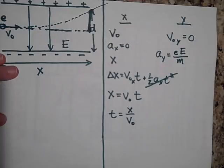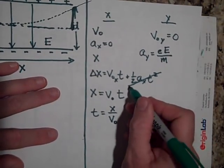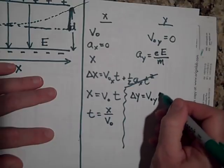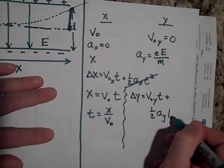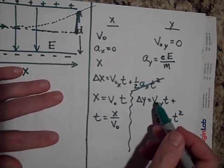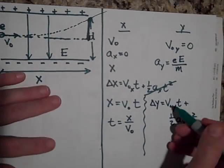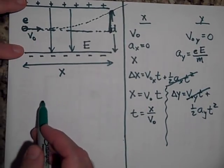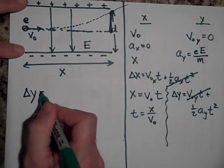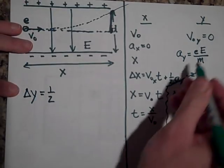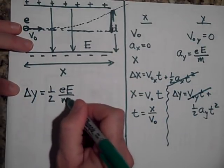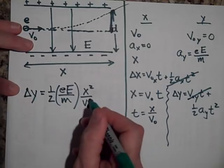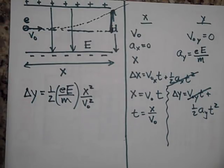So we want to know how much it's going to get deflected from its straight line path. So again, I'll come right back with the same equation. Delta Y this time is equal to V naught in the Y direction times T plus one half A in the Y direction times T squared. Well, there is no velocity in the Y direction initially. It's all in the X. So we'll get rid of that. So Delta Y, which is what we're after, is equal to one half A. Now A is this times T squared, which would be X squared over V naught squared. And there you have it. That's the deflection in the Y direction.